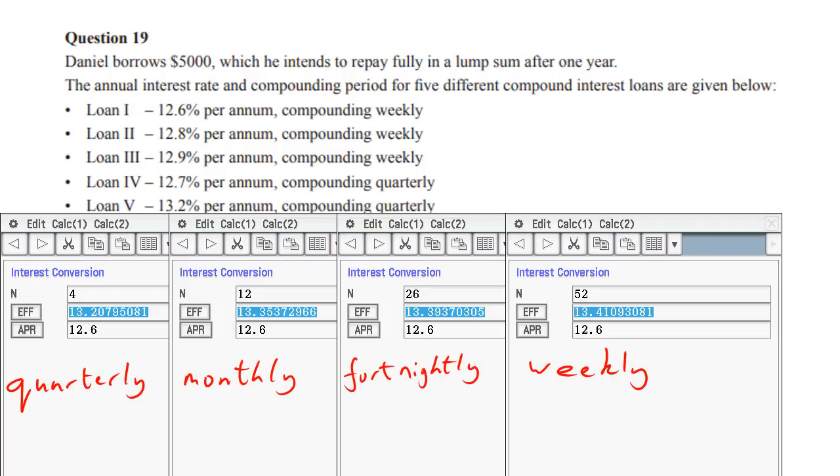Okay. So we pointed out as fairly obvious, if you have 12.6 weekly compared to 12.9 weekly, that obviously 12.6 is lower. Good for a home loan. 12.9 is higher. Good for investment.